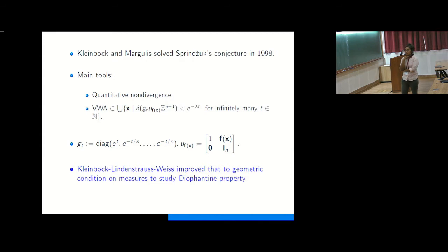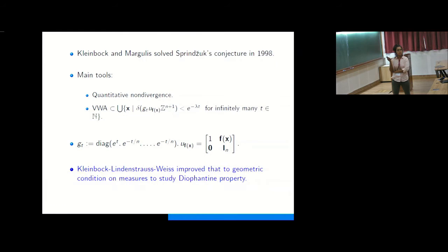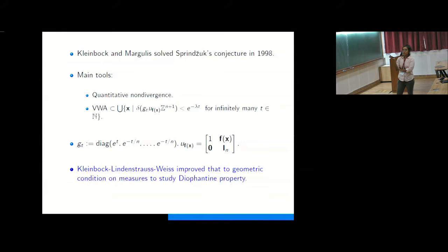Later, Kleinbock, Lindenstrauss, and Weiss improved this to a more general setup in terms of measures. They gave a geometric condition on measures such that, under the diagonal G_t action, the orbit of points affected by G_t goes to infinity exponentially fast, and they concluded that the Diophantine exponent of such a measure is n.